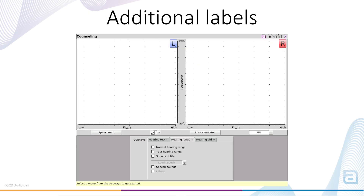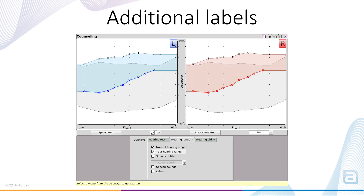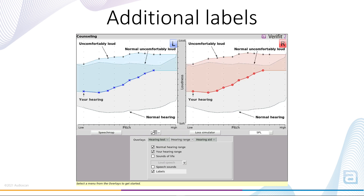Finally, one last tweak to the counseling tool. In each overlay group, the clinician is able to turn on explanatory labels for the elements on screen to aid in the counseling conversation. These have now been expanded to cover more elements, in particular for the Hearing Range overlay group.